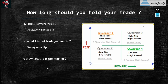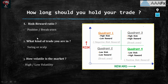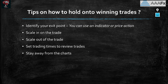The last important factor is volatility, which we've already covered. All three — risk/reward ratio, trade type (scalp vs swing), and market volatility — help you know how long to hold your trades. Risk/reward ensures an overall win; knowing your trade type tells you which trades to take; and volatility tells you whether the market is moving or not.